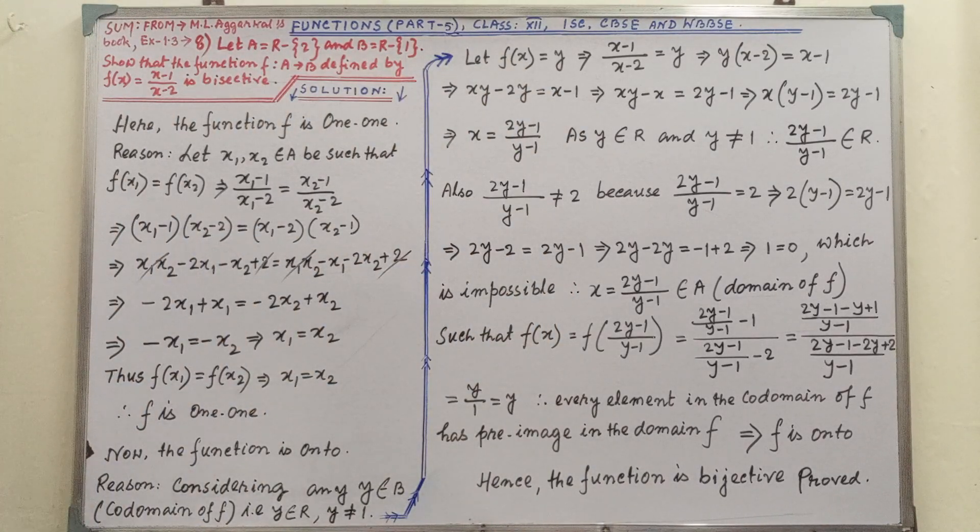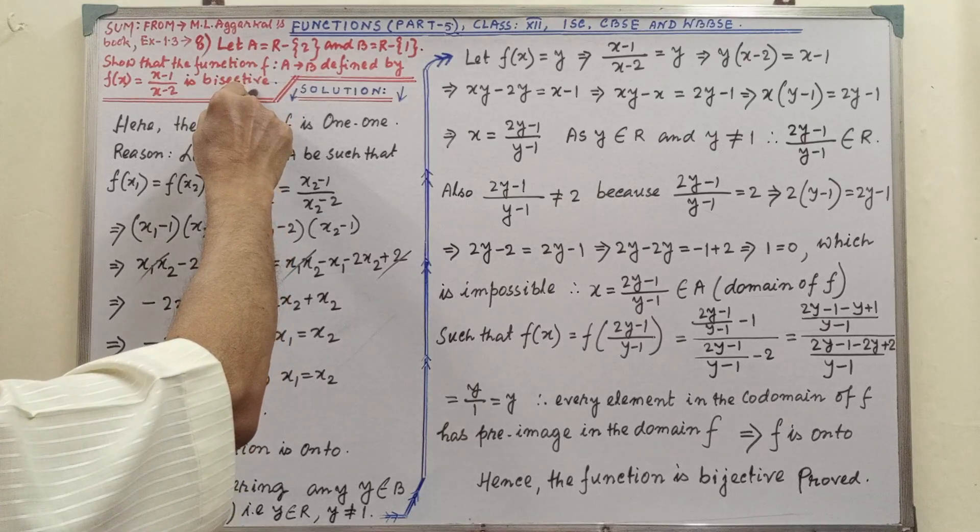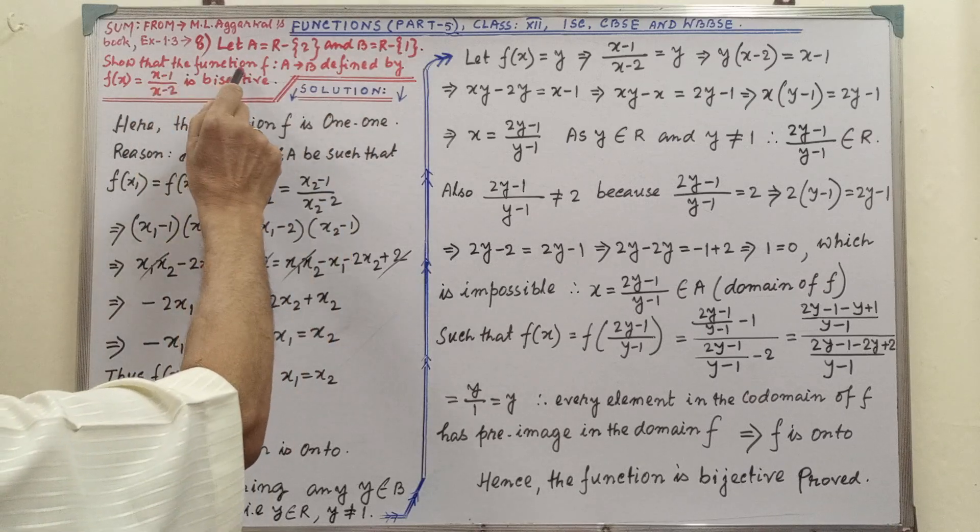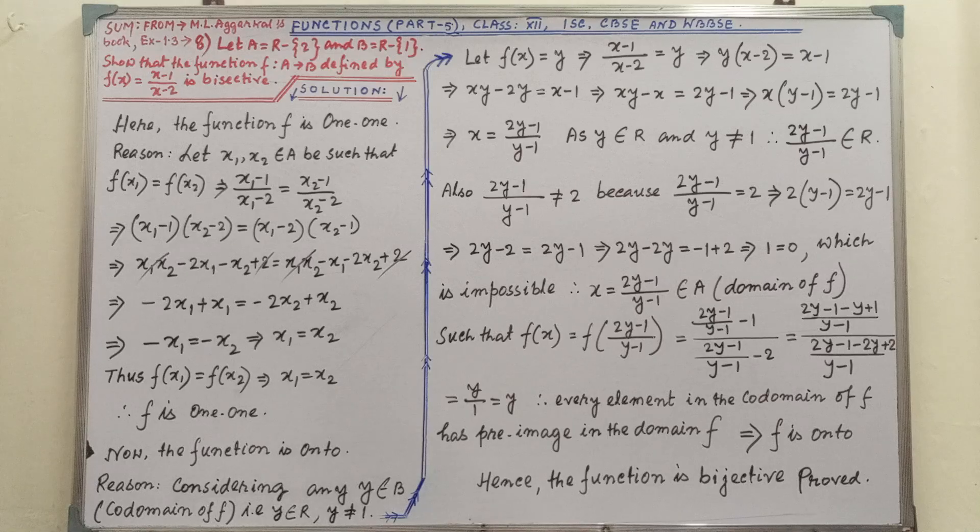Sums given from M.L. Agarwal's book, exercise 1.3, sum number 8. Here it is written clearly and you will get in your book also. Let A equal to this and B equal to this so that function defined by this is bijective.